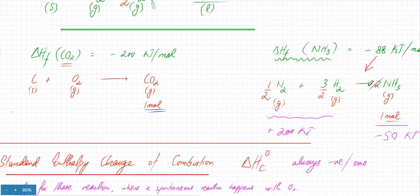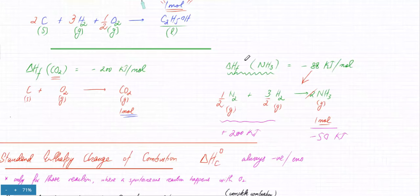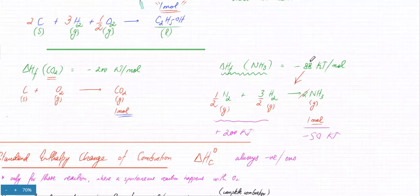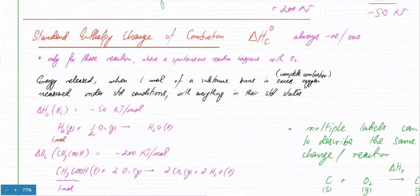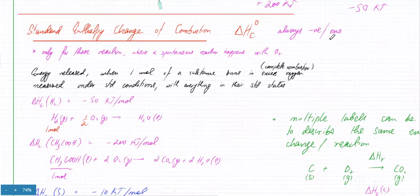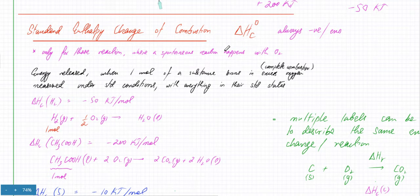Remember, they're not going to give you the reactions — they'll just tell you, for example, 'enthalpy of formation of NH3 is minus 88.' You have to figure out yourself what the reaction is; they'll just assign these labels. Then we have the enthalpy change of combustion, which is always exothermic because it's a combustion reaction, and it only applies to reactions where spontaneous combustion happens with oxygen.